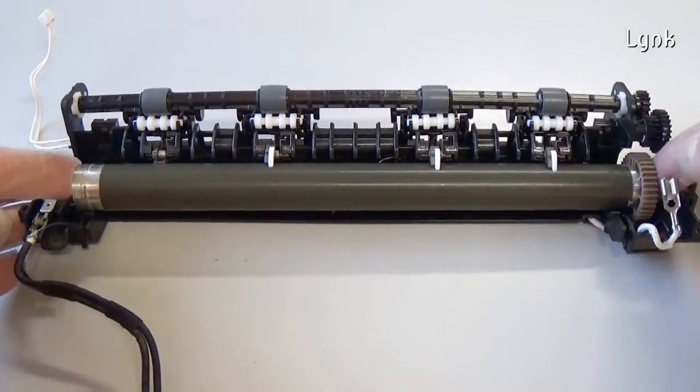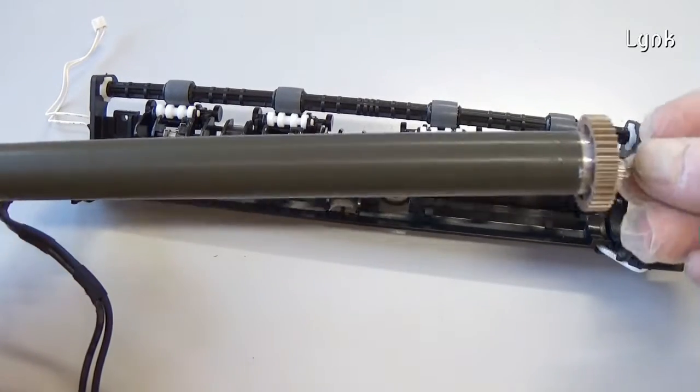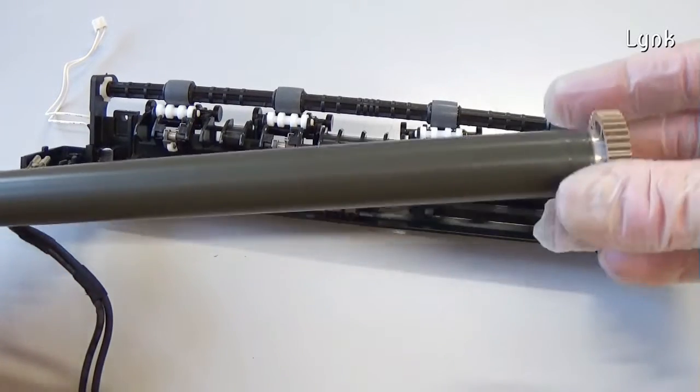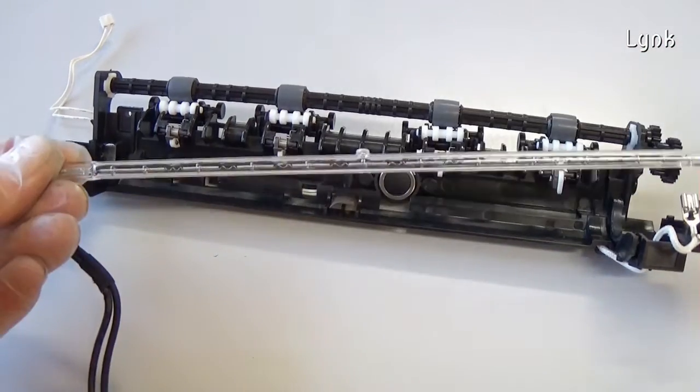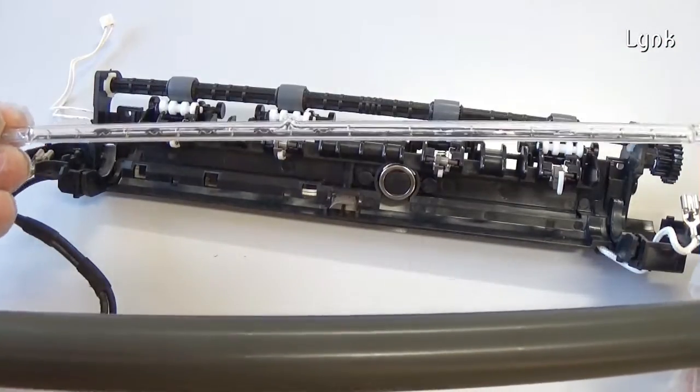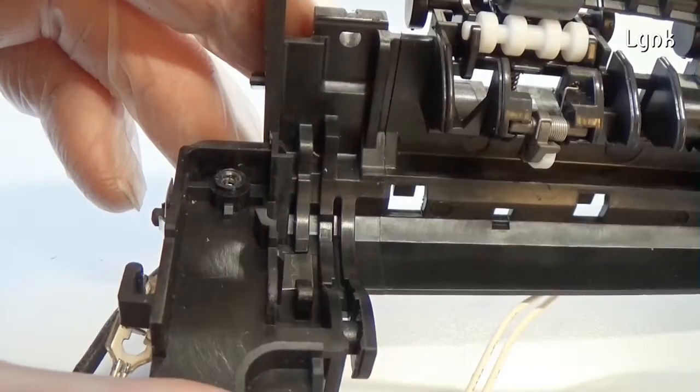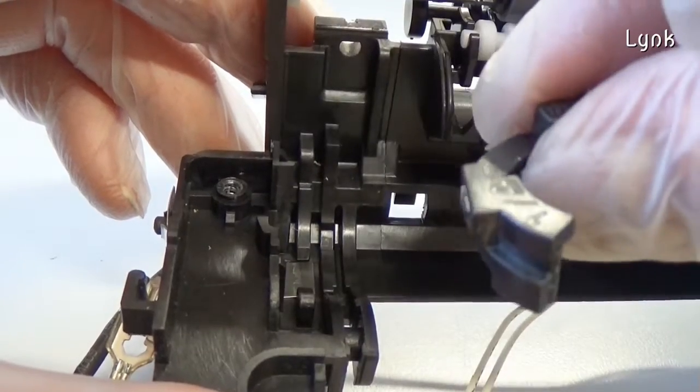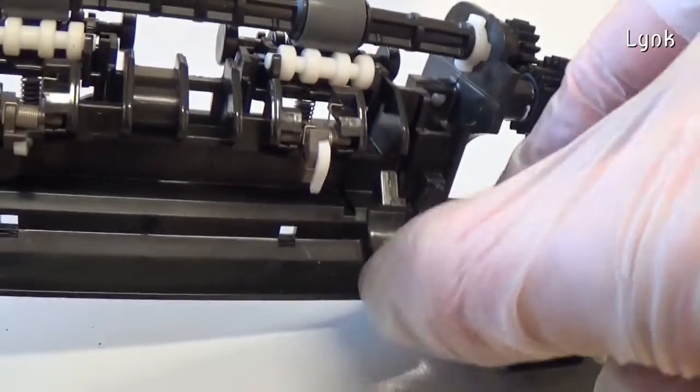Lift half and remove the upper fuser roller. Release half and remove the two blocks. Remove the other lamp. Remove the other bushings and rear side panel.